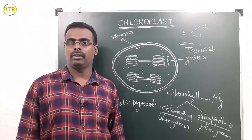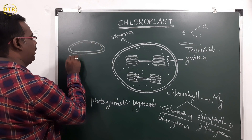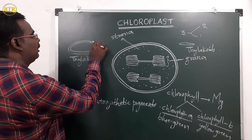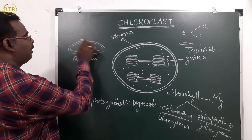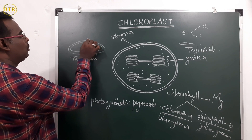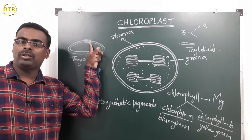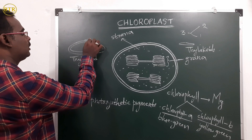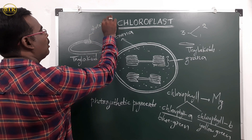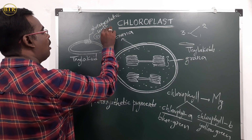Looking at the structure of the thylakoid membrane, in the membrane there are many pigment molecules present in groups. This group includes chlorophyll, carotenoids, and phycobilins. This group of pigment molecules is called a photosynthetic unit, or light harvesting complex.